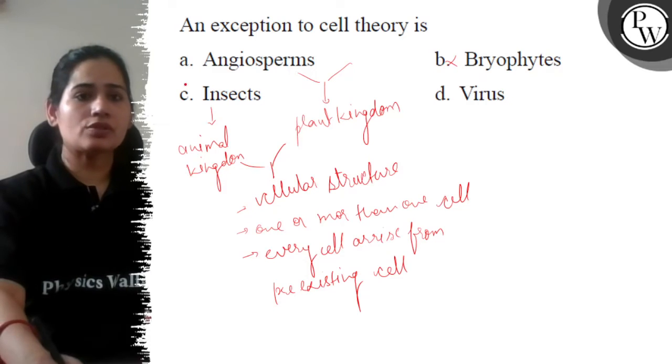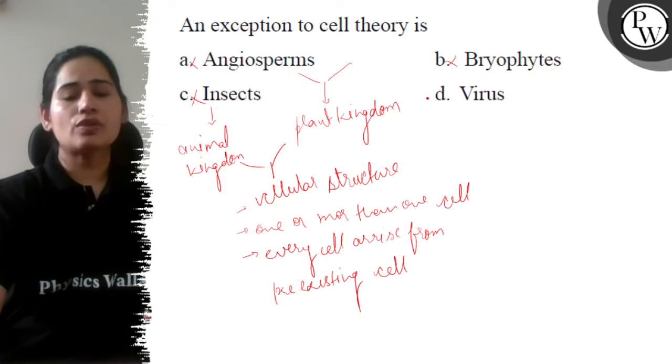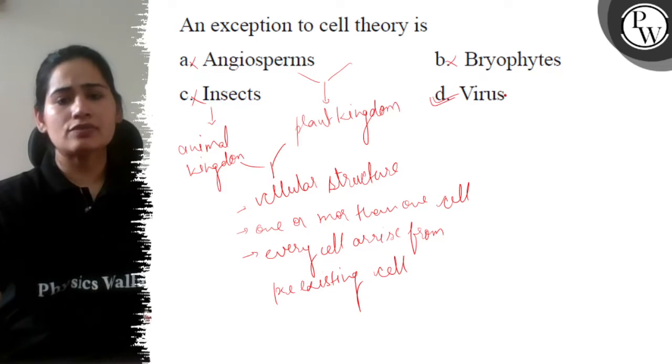So option b is wrong, option a is also wrong, option c is also wrong. The correct answer is d, virus. Why virus?